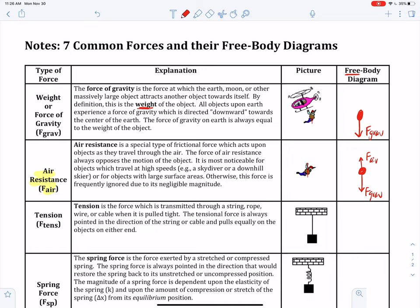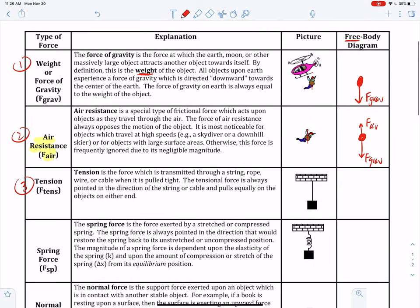Let's go to our third force, tension. So this was two, this was one. Let's go to force number three, tension. Tension is the force which is transmitted through a string, a rope, a wire, or a cable when it is pulled tight. The tensional force is always pointed in the direction of the string or cable and pulls equally on the objects on either end. So we're going to focus on this box, which is hanging by a, you can't really tell, maybe it's a rope, maybe it's a cable.